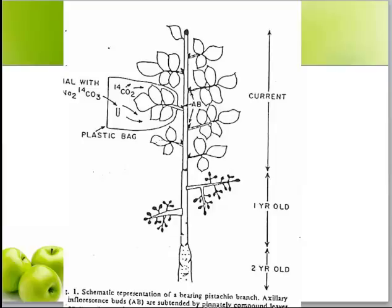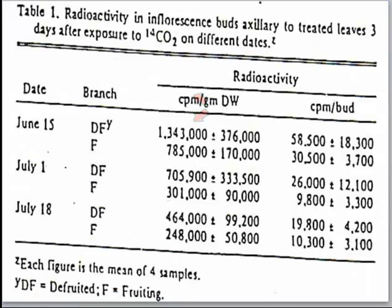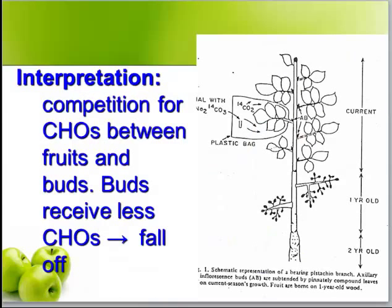Here is a schematic of a bearing branch. In a classic paper, researchers applied radioactive carbon dioxide, C14, to the leaves in fruiting and non-fruiting branches, and then looked at the amount of radioactivity in the buds subtending the leaves. They applied the radioactive carbon dioxide on three dates to fruiting and non-fruiting branches. The data indicate that about two times as much radioactivity was found in the buds of defruited branches versus the fruiting branches on all dates measured — shown in counts per minute per bud. Thus, the buds on fruiting branches were receiving less carbohydrates, indicating a competition for carbohydrates between fruits and buds, causing buds to receive less carbohydrates and consequently fall off.